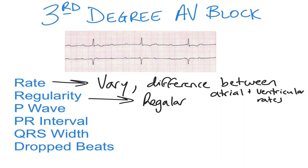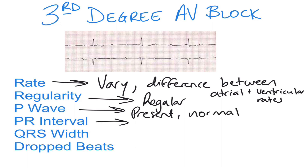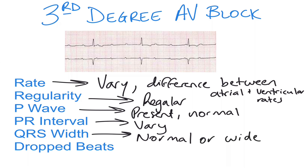P waves are present and normal. Your PR interval is going to vary due to the difference between your P waves and your QRS complexes. Your QRS complexes can be normal or wide, and there are no dropped beats — and that's going to be the major difference between a second-degree type one Wenckebach block and a third-degree AV block.